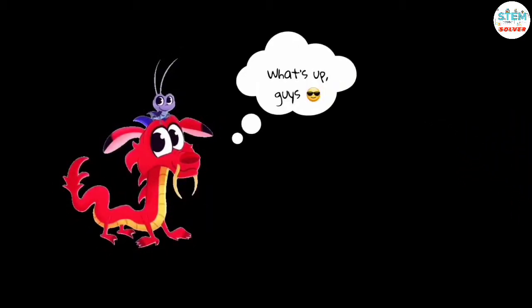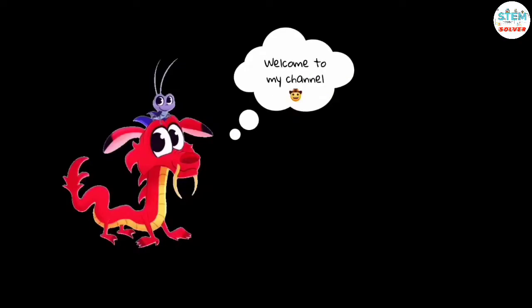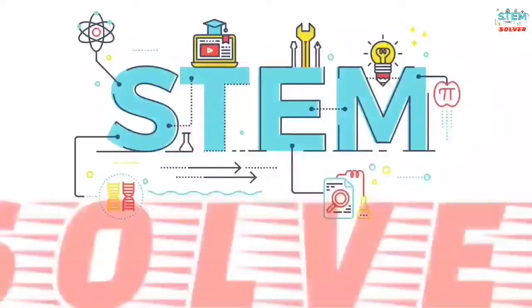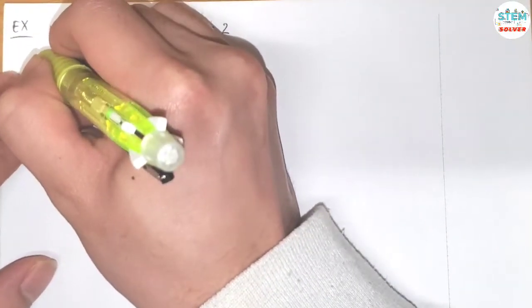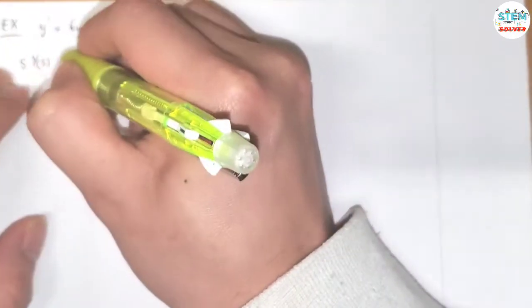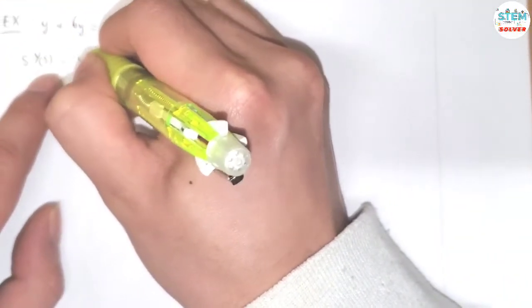How to solve the initial value problem using the Laplace transform method. By the transform of a derivative theorem, we have S to the first times capital Y of S minus Y of 0.